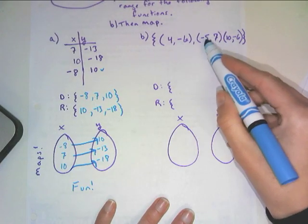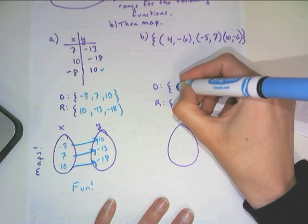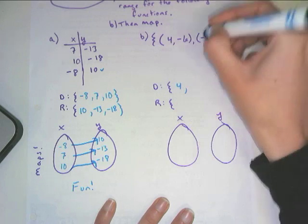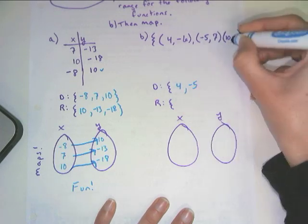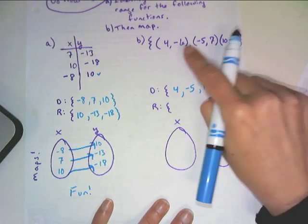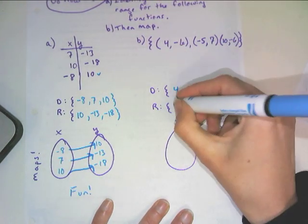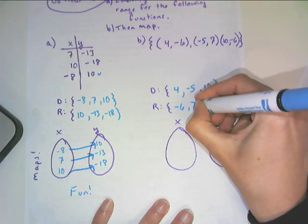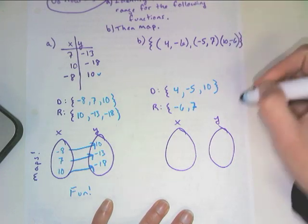With the second one, we have the domain, we have three sets for our domain. We've got four, the negative five is also an x, and the ten is an x, and we'll close up those braces. And then the range are our set of y values. So we've got a negative six, we've got a seven, and then we have a negative six again, so we won't repeat them.